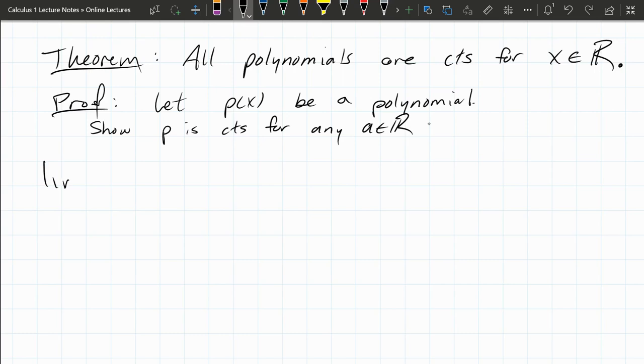First of all, what is a polynomial? Remember, a polynomial can be written as—I'm going to write this for any x in R—p(x) = a_n x^n + a_{n-1} x^{n-1} + ... + a_1 x + a_0.